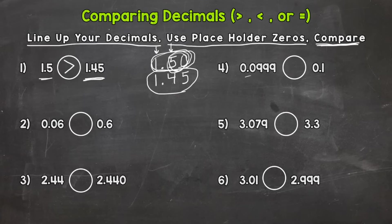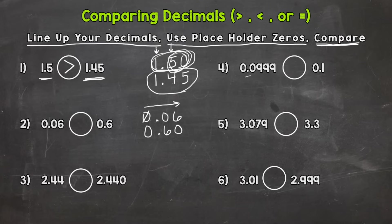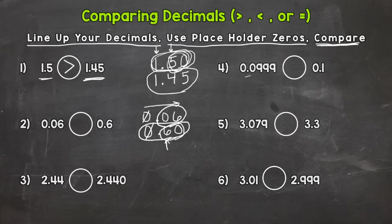Let's take a look at number two. We have six hundredths — I'm going to line them up — and six tenths. Use placeholder zeros and now we compare, going left to right. There aren't any whole numbers here so we can't compare those zeros. Looking at the tenths place, we have a zero and a six. Obviously that six is greater than that zero, so six tenths — or sixty hundredths — is greater than six hundredths. We go back to our original problem and read this comparison sentence from left to right: six hundredths is less than six tenths.